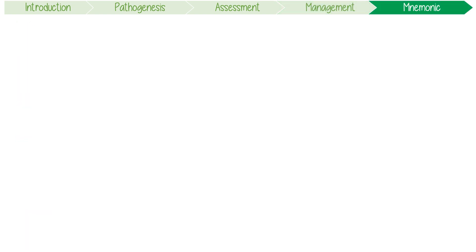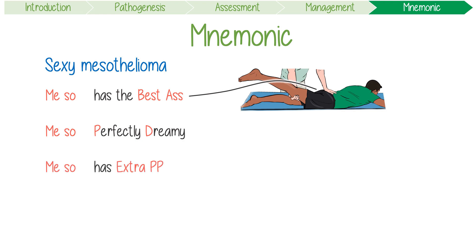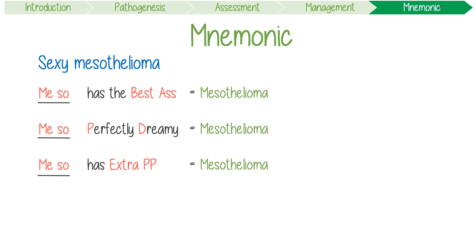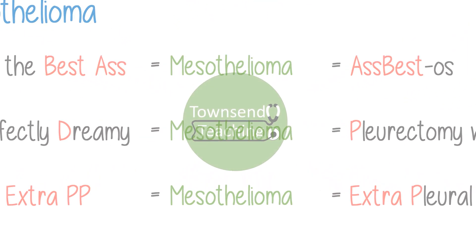To help you remember some of the core facts about this disease, use this mnemonic about mesothelioma: 'Meso has the best ass, meso perfectly dreamy, meso has extra PP.' This helps you remember that mesothelioma is caused by asbestos, can be surgically managed with PD (pleurectomy with decortication), and can be managed with EPP (extra pleural pneumonectomy). Mnemonics can be the best way to get through med school — check out this playlist where all my videos have catchy ways to remember content. Thanks for watching — Townsend Teaching.